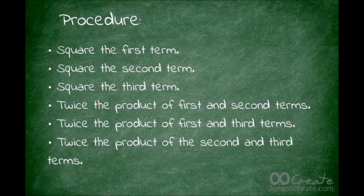We need to know the procedure. The first step is square the first term. The second step is square the second term. The third step is square the third term. The fourth step is twice the product of the first and second terms. The fifth is twice the product of the first and third terms. The last step is twice the product of the second and third terms. The squared trinomial must have six terms.